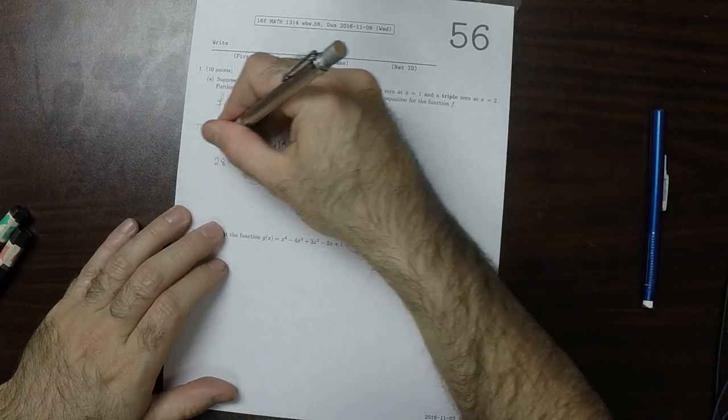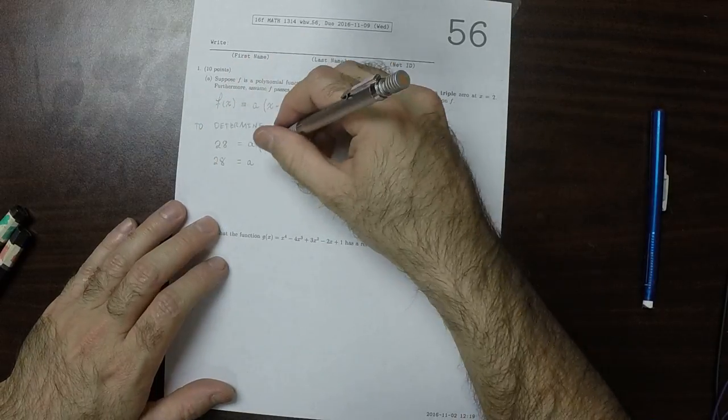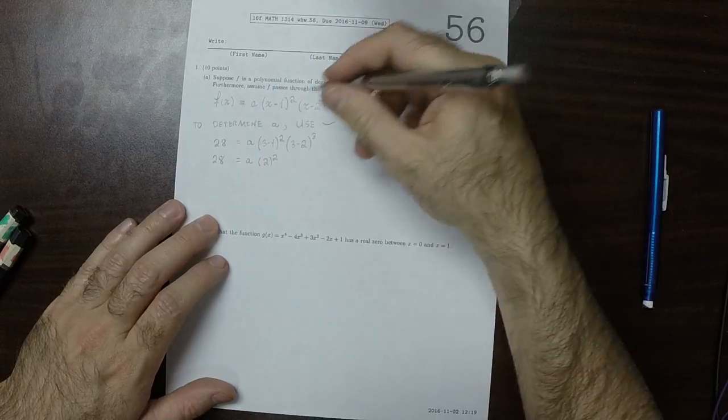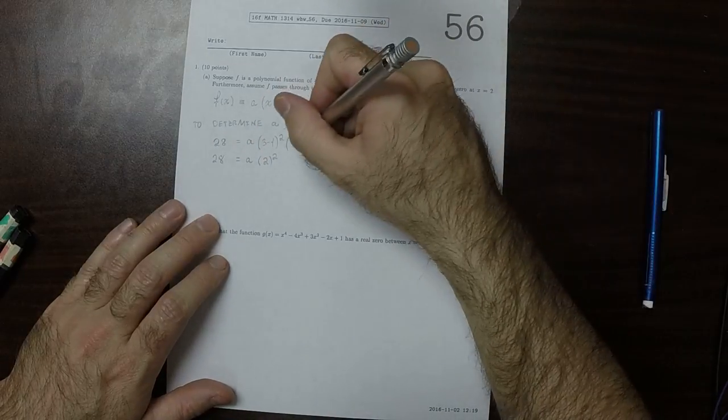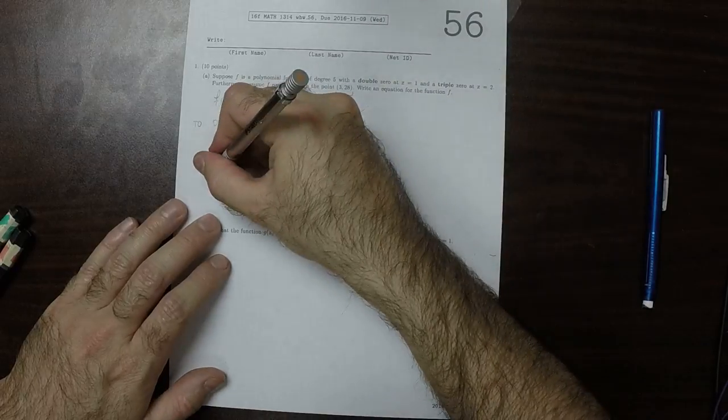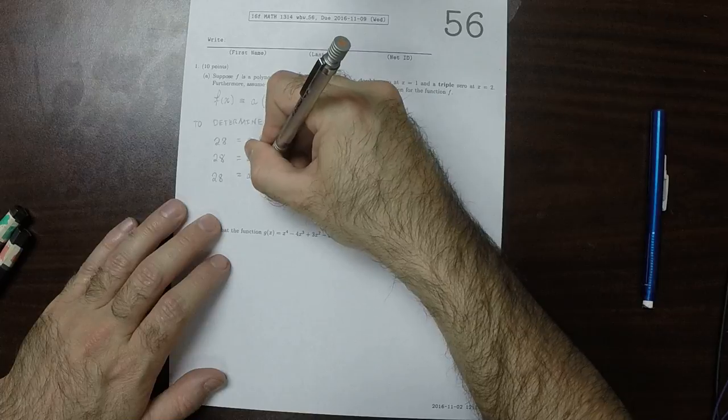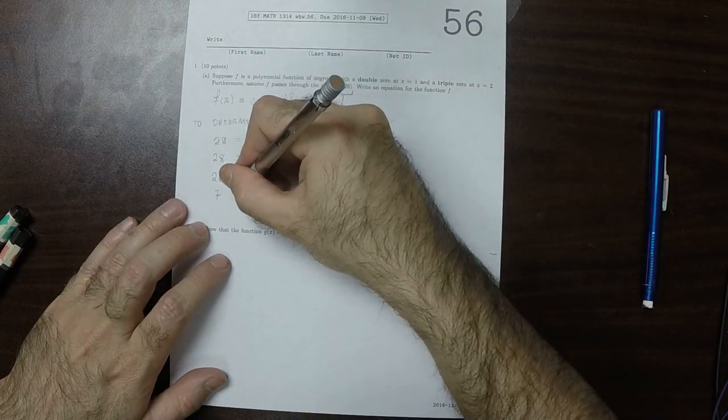So 28 is a multiplied by 2 squared, multiplied by 1 cubed, but 1 cubed is just 1. So 28 is a multiplied by 4. So 7 is a.